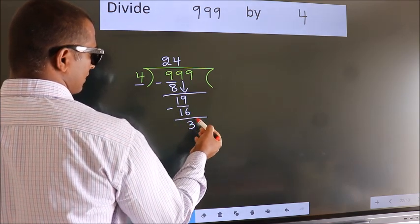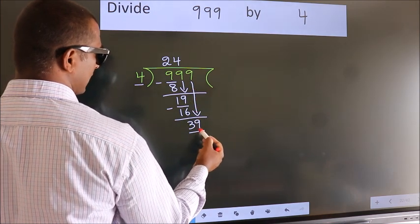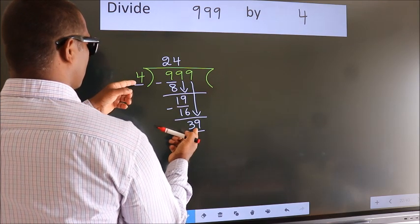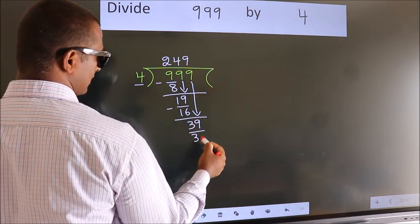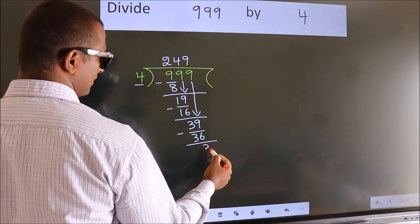After this, bring down the beside number. So, 9 down. So, 39. A number close to 39 in 4 table is 4 nines, 36. Now we subtract. We get 3.